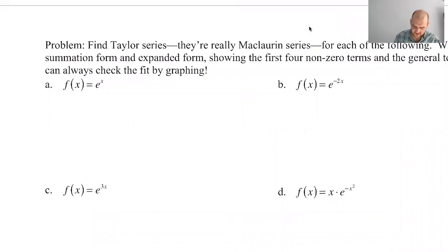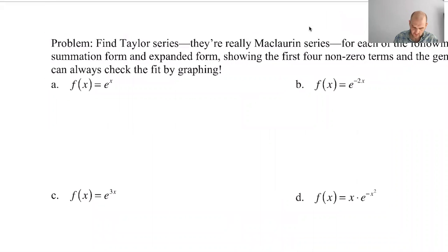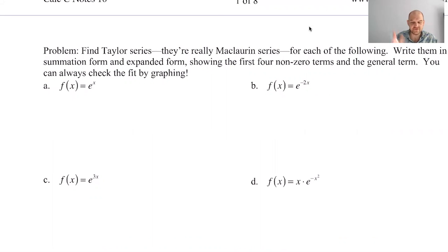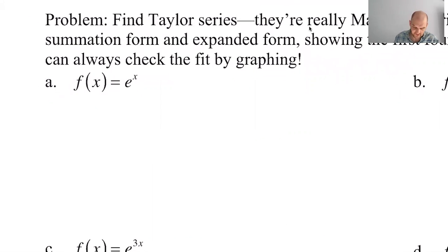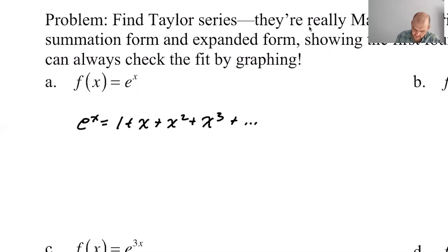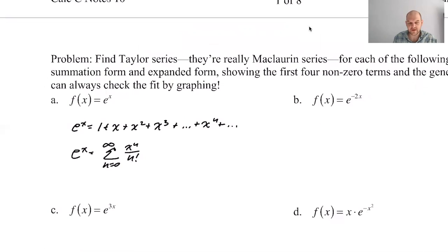Taylor series — let's see if we can do it. We want to use a series that we already know to make a new series, and write them in summation form and expanded form. The first one's e to the x — we have that memorized. So e to the x is 1 plus x plus x squared... plus x to the n, or e to the x is the sum from 0 to infinity of x to the n over n factorial. The more you write it, the better off you'll be.